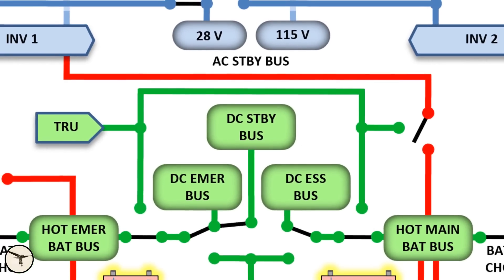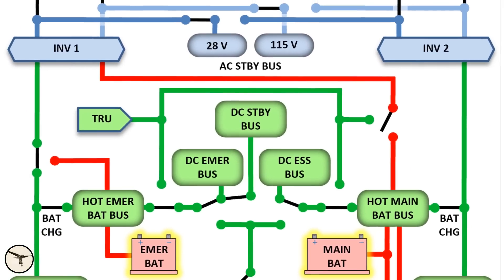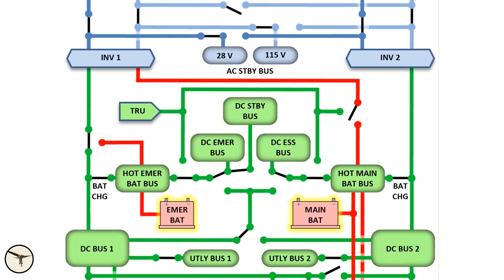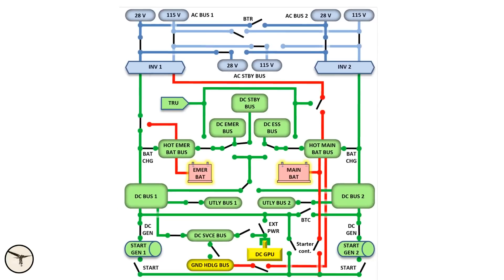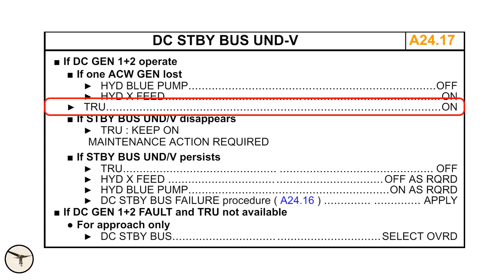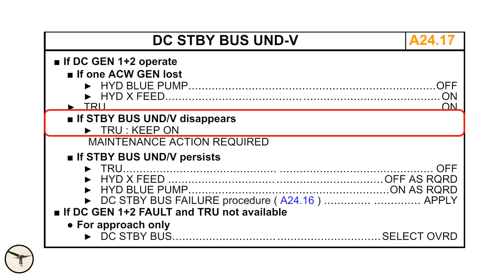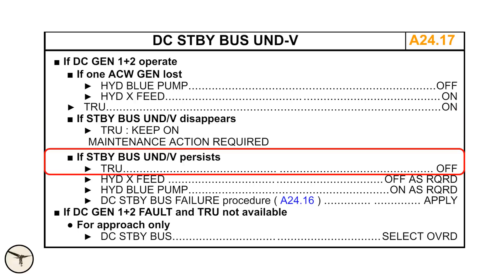The DC standby bus is very important, because it powers instruments used to fly an instrument approach, and to control the flaps and the landing gear. The checklist tells you to select the TRU on. If the under-voltage message appears, you leave the TRU on. If the failure persists, select the TRU off. Remember that.